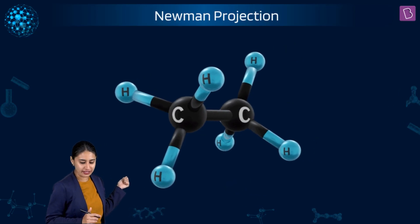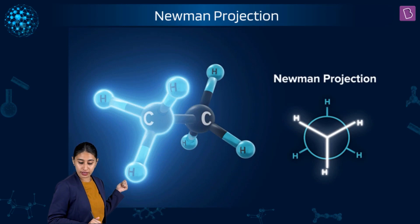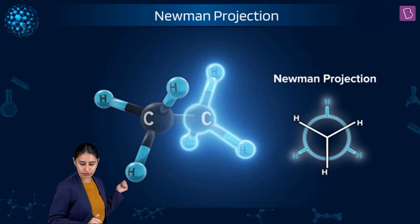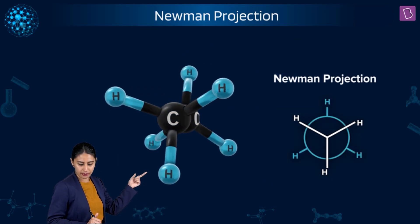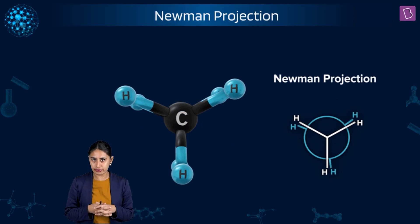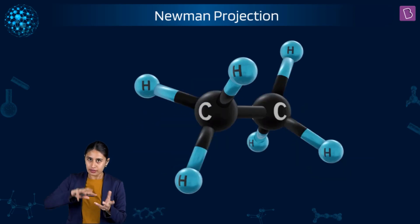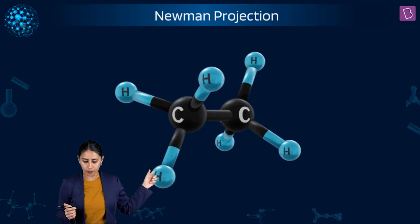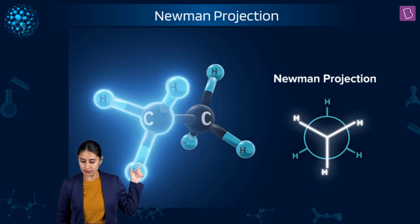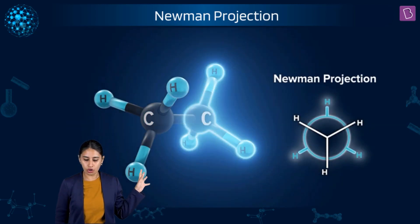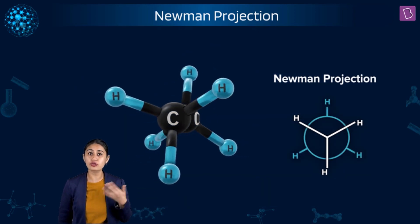From sawhorse, how can we understand Newman? We look at the first carbon, the three hydrogens of the first carbon, then the second carbon, and the three hydrogens of the second carbon. We are looking at it head-on. The Newman projection is on the right, the sawhorse is on the left.